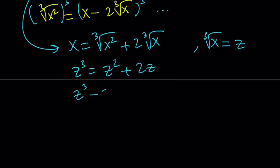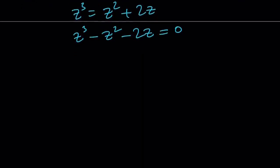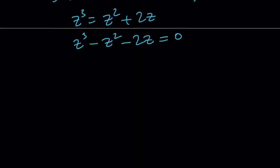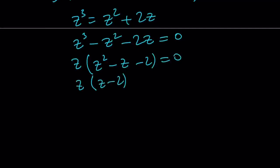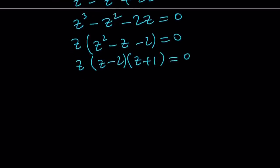Let's put everything on the same side: z cubed minus z squared minus 2z equals 0. Now take out a z. You get z(z squared minus z minus 2) equals 0. And this quadratic is factorable: (z minus 2)(z plus 1) equals 0, or use the quadratic formula if you want. From here, we get the three values for z: z equals 0, z equals 2, and z equals negative 1.